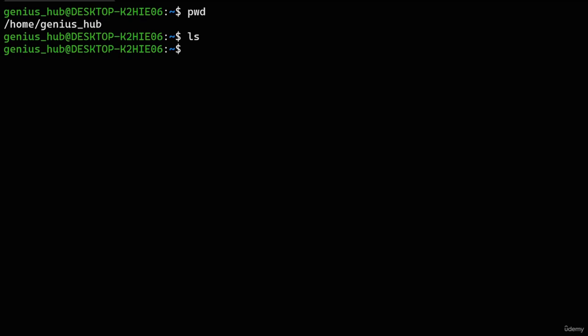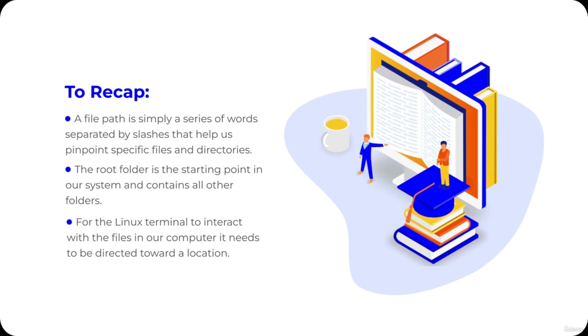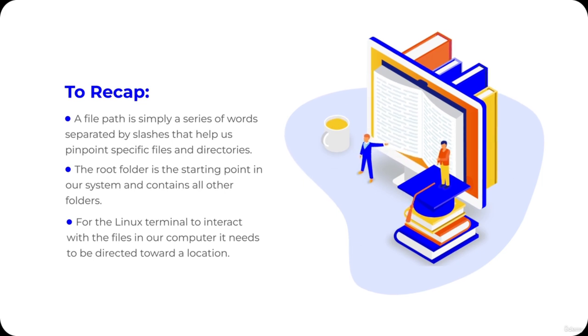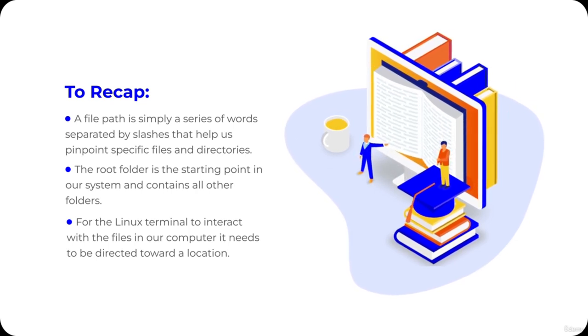That brings us to the end of today's lesson. Here's a recap: A file path is simply a series of words separated by slashes that help us pinpoint specific files and directories within our file system. The root folder is the starting point in our system and contains all other folders — in a path, it's represented by a single slash at the very beginning. For the Linux terminal to effectively interact with the files in our computer, it needs to be directed toward a specific location.